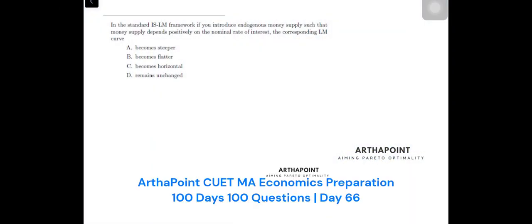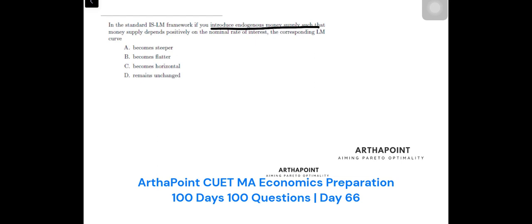Read this question and try to do it yourself first. In the standard IS-LM framework, if you introduce endogenous money supply such that money supply depends positively on the nominal rate of interest, what happens to the corresponding LM curve?